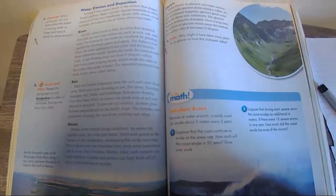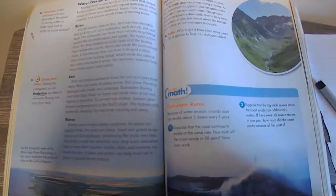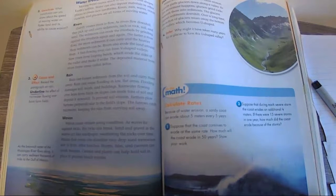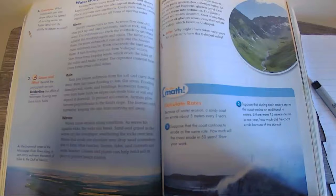Water erosion and deposition. Moving water causes much of the erosion that shapes the earth's surface. Water can also deposit materials in other places to create new landforms. Rivers, rain, waves, ocean currents, and glaciers are all forms of moving water.